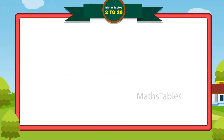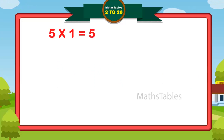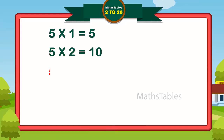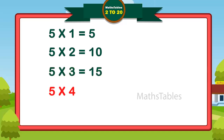Five ones are five. Five twos are ten. Five twos are ten. Five threes are fifteen. Five threes are fifteen. Five fours are twenty. Five fours are twenty. Five fives are twenty-five.